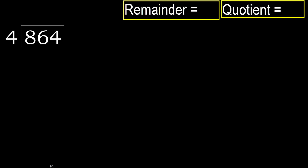864 divided by 4. 8 is not less, therefore with 8: 4 multiplied by which number is nearest to 8 but not greater? 4 multiplied by 3 is 12 — 12 is greater. 4 multiplied by 2 is 8 — is not greater. Ok.